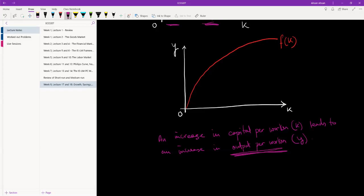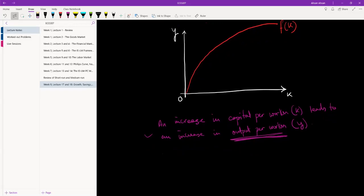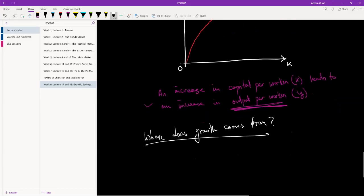So effectively, this is an example of how growth can occur. That leads us straight to the question: where does growth come from? So far this semester we have not talked about growth. We may have talked about GDP being this much in year one and then in year two it's a bit higher, and then year three it's a bit higher.